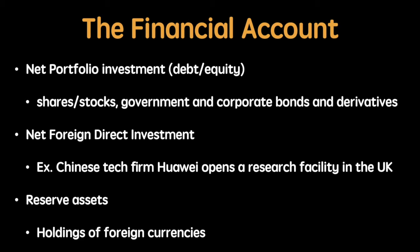Second is net foreign direct investment. This includes investments such as a Chinese firm like Huawei building and developing a research facility in the United Kingdom. This represents a credit to the UK balance of payments and a debit to the Chinese balance of payments. To understand whether it is a credit or debit, just follow the money flow — cash in is a credit, cash out is a debit.